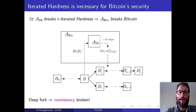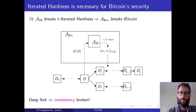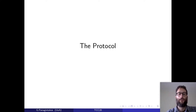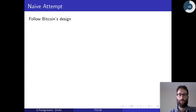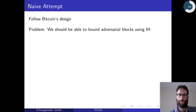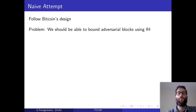This is exactly what we wanted: breaking iterated hardness means breaking Bitcoin, which effectively creates an incentive to break this property. Our first naive attempt is to try to follow Bitcoin's design. The main problem with that is that we have to bound the rate at which the adversary generates blocks using the iterated hardness assumption.